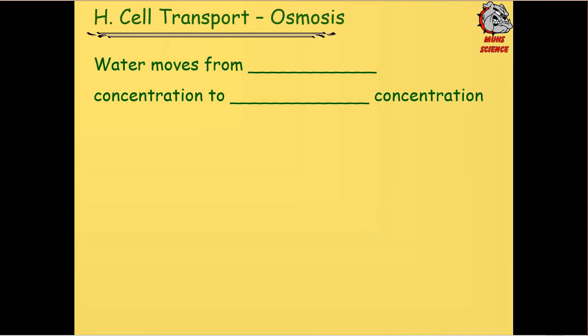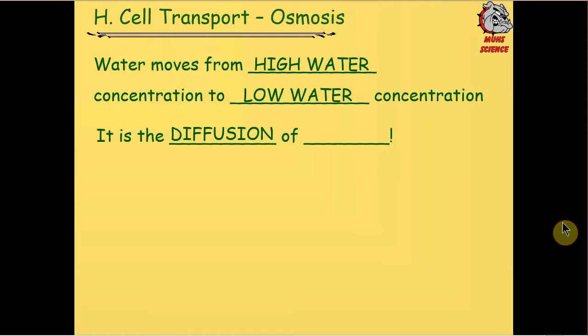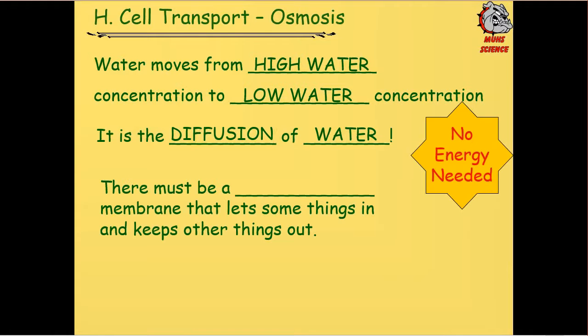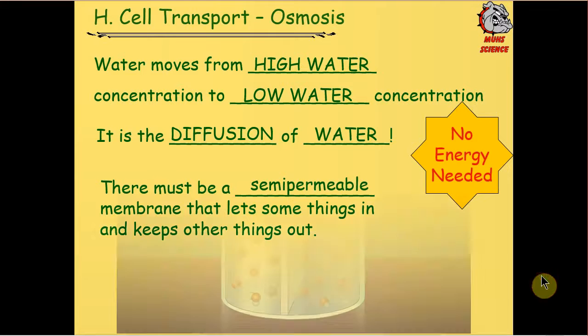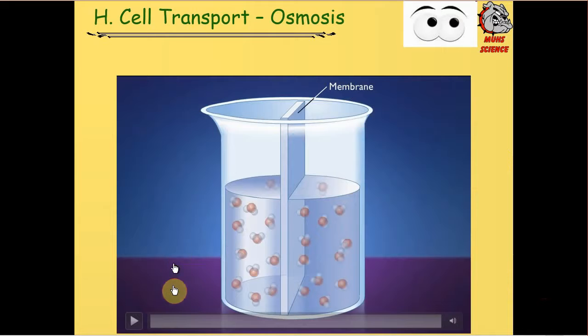Osmosis is the same basic idea, except water moves from a high water concentration to a low water concentration. All it is is the diffusion of water across a membrane. And then we have to have a specific type of membrane. We have to have what's called a semi-permeable membrane. Semi-permeable is just a word that means that the membrane allows some things through but keeps other things out. That's almost always based on particle size. Bigger particles can't get through, smaller particles can. Let's take a look at a short video here on osmosis.